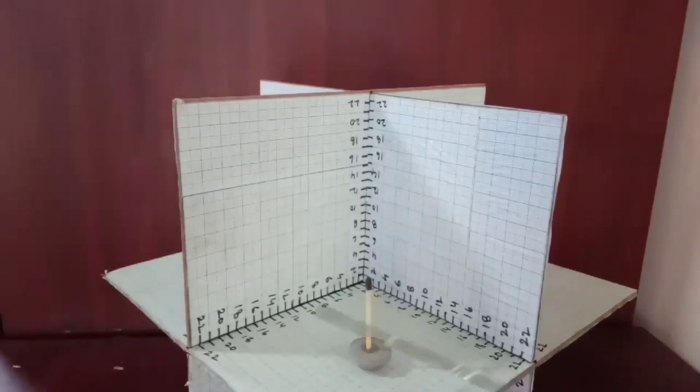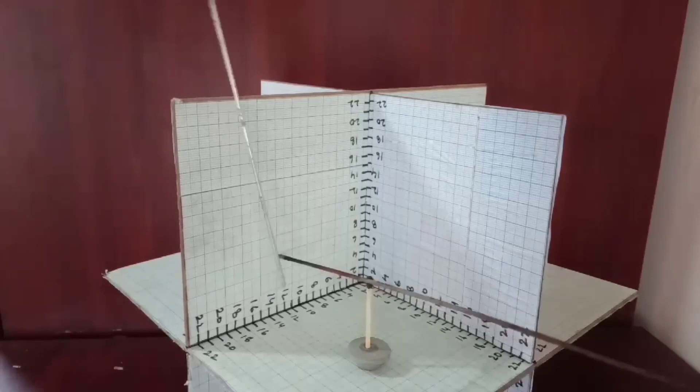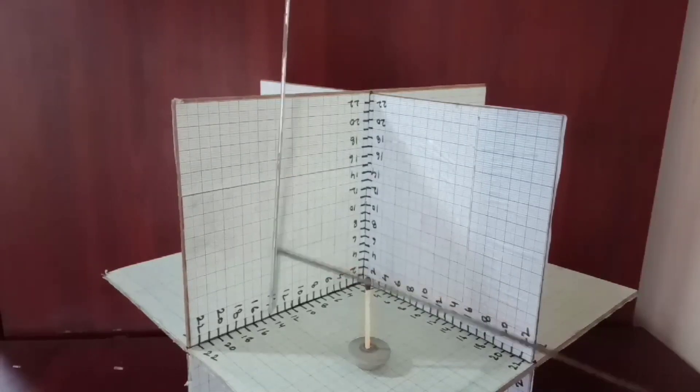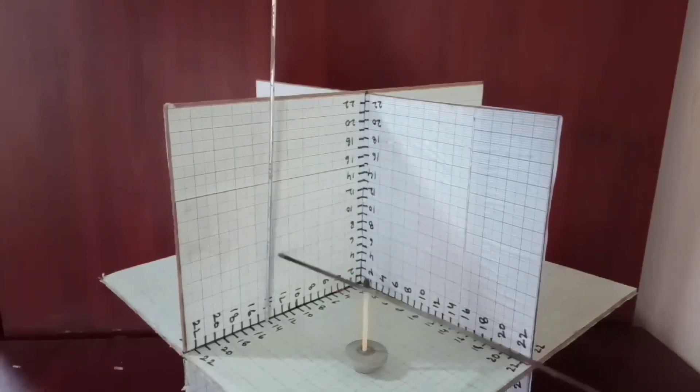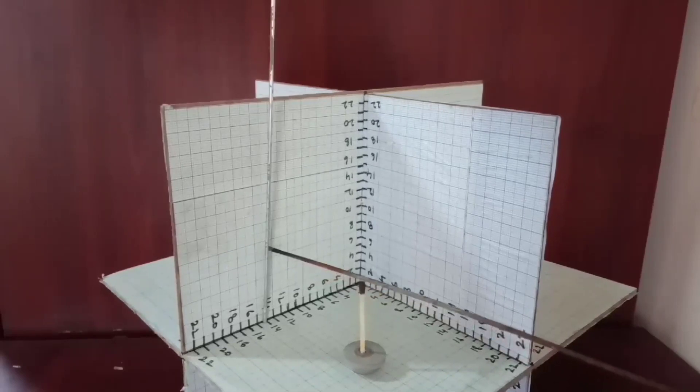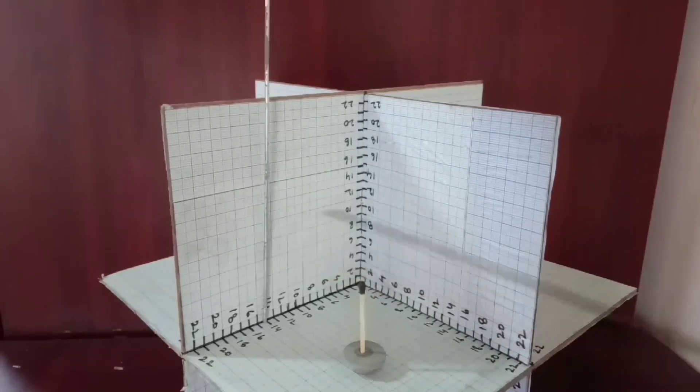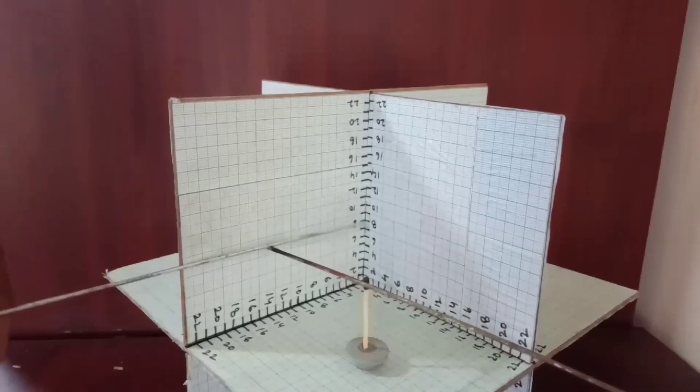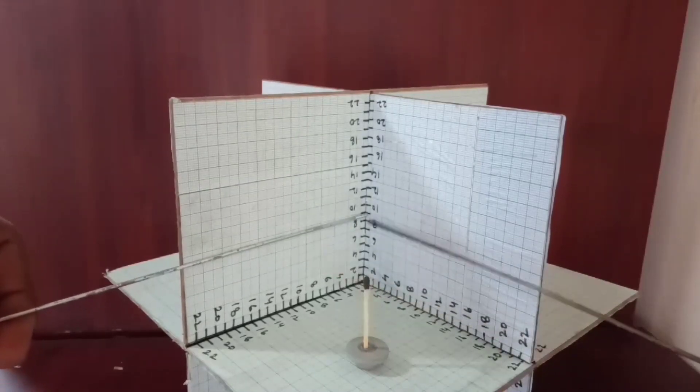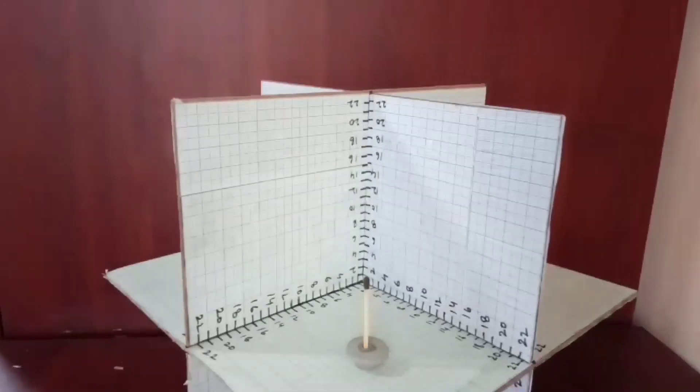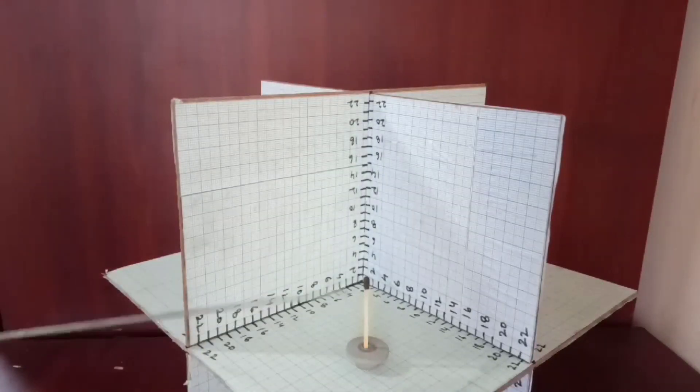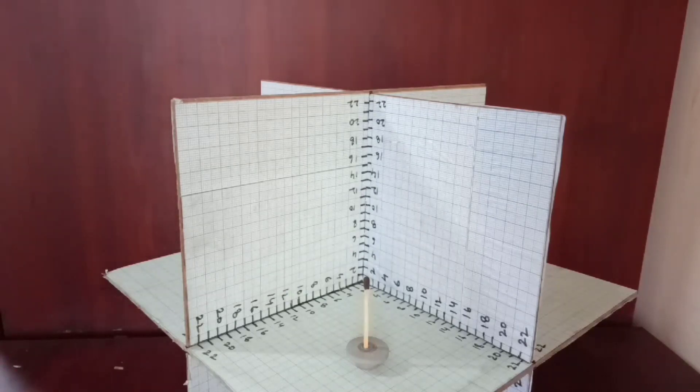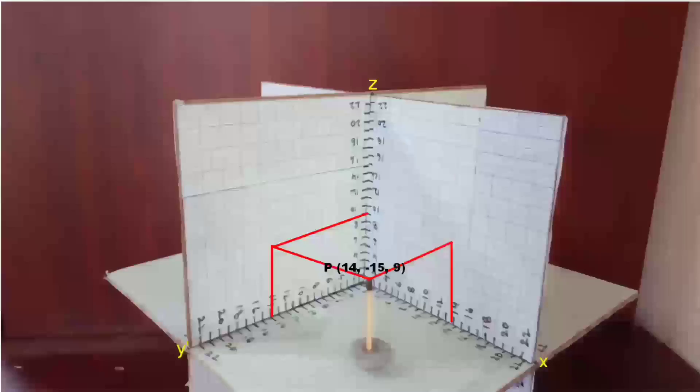For this use two straight broomsticks and find out the x, y, and z coordinates like I am doing in this video. This is y coordinate. And this is z coordinate. So we will get the three coordinates of this point P as 14, minus 15, and 9 respectively.